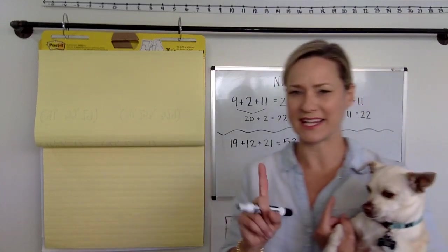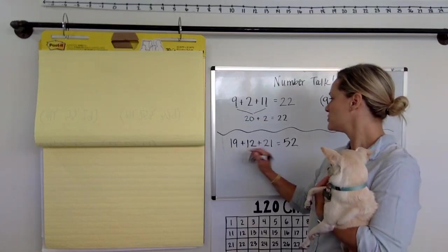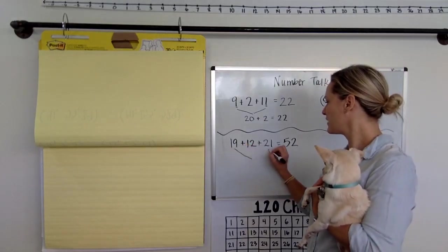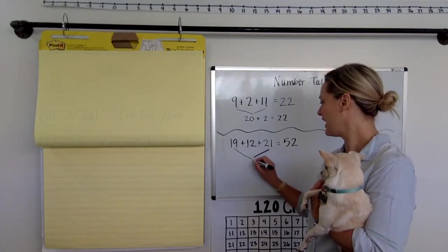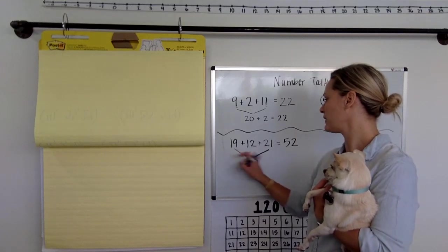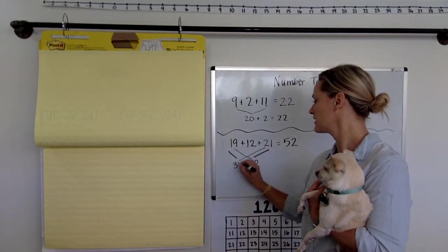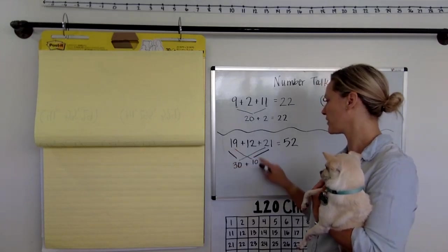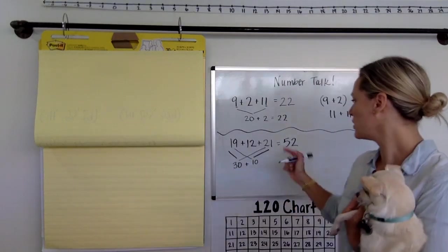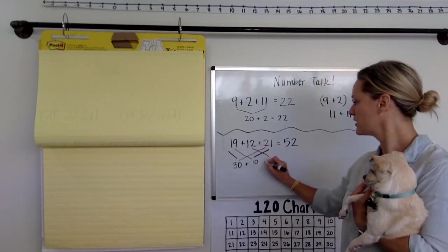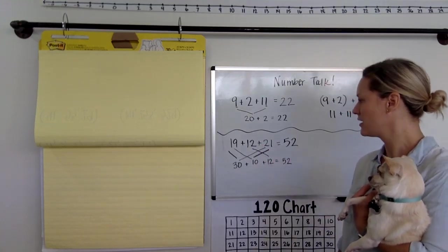Or maybe I'm going to guess some of you did some friends of 10 again. So maybe you joined the 19 and the 21 because you knew nine plus one was 10. So maybe you did that. And then you had the 20 plus the 10 was 30. So that would make 40. So 19 plus 21 would make 40. And then you had 12 more. And maybe you just knew that was 52.